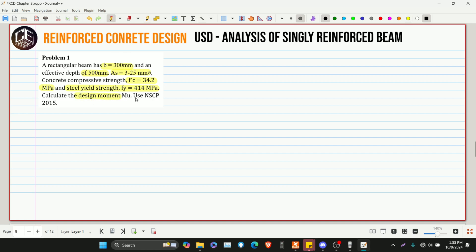So, nakalagay rito MU, so dapat hindi. Kasi kung design moment ang pinapahanap, therefore, that is phi Mn. So, kailangan natin i-multiply yung ating nominal moment ng reduction factor para maging design moment. Ngayon, para makuha natin yung Mn, ang equation nun is equivalent to C multiplied by D minus A over 2.